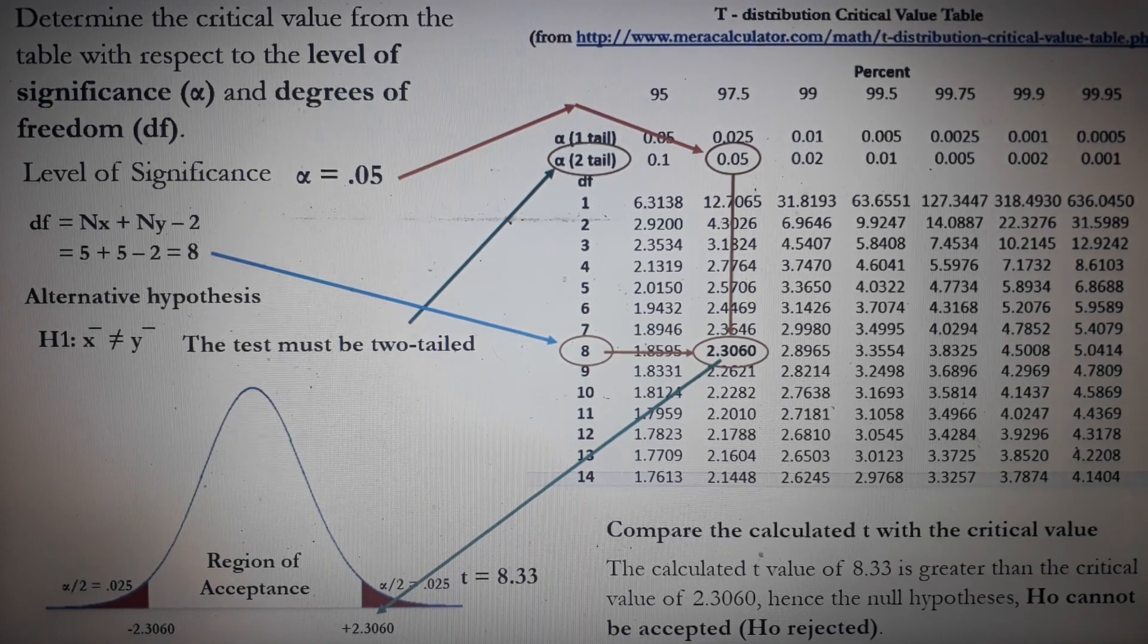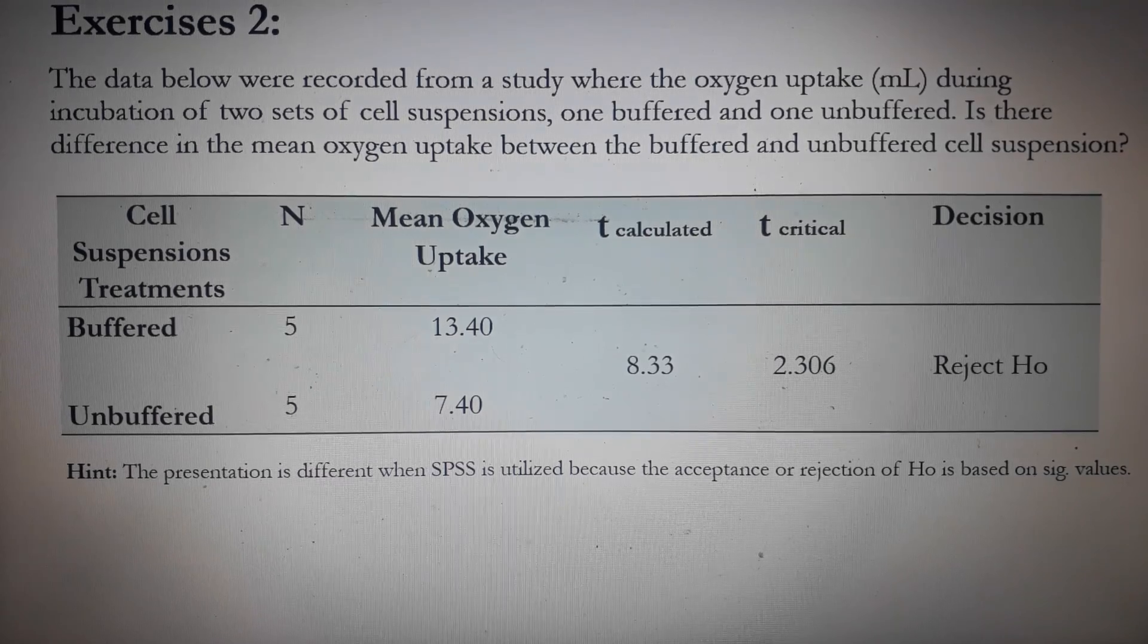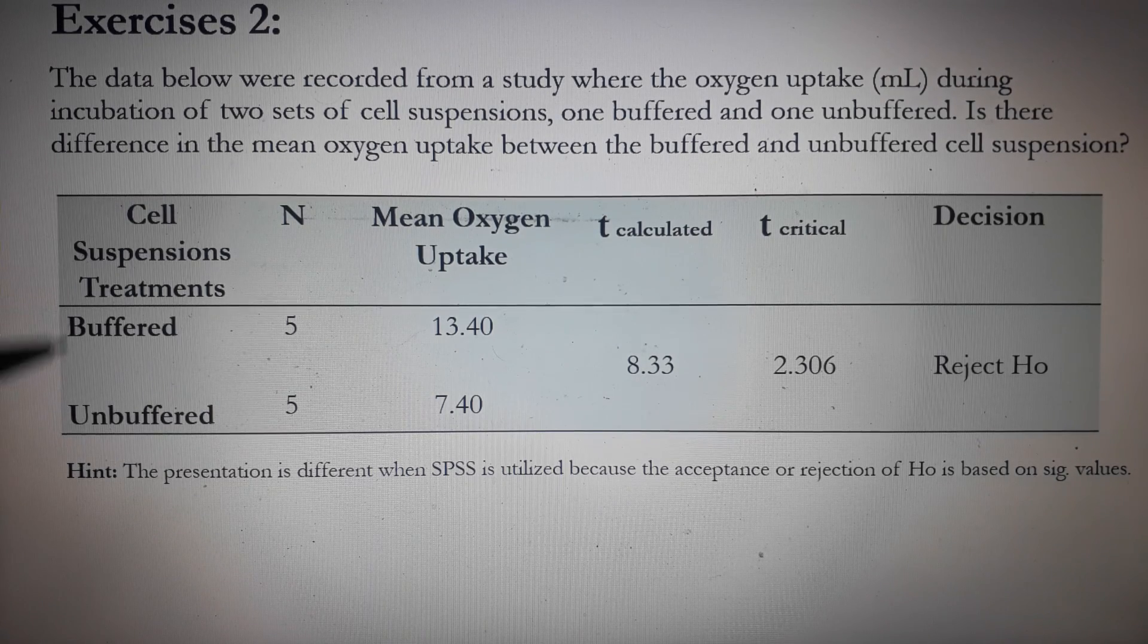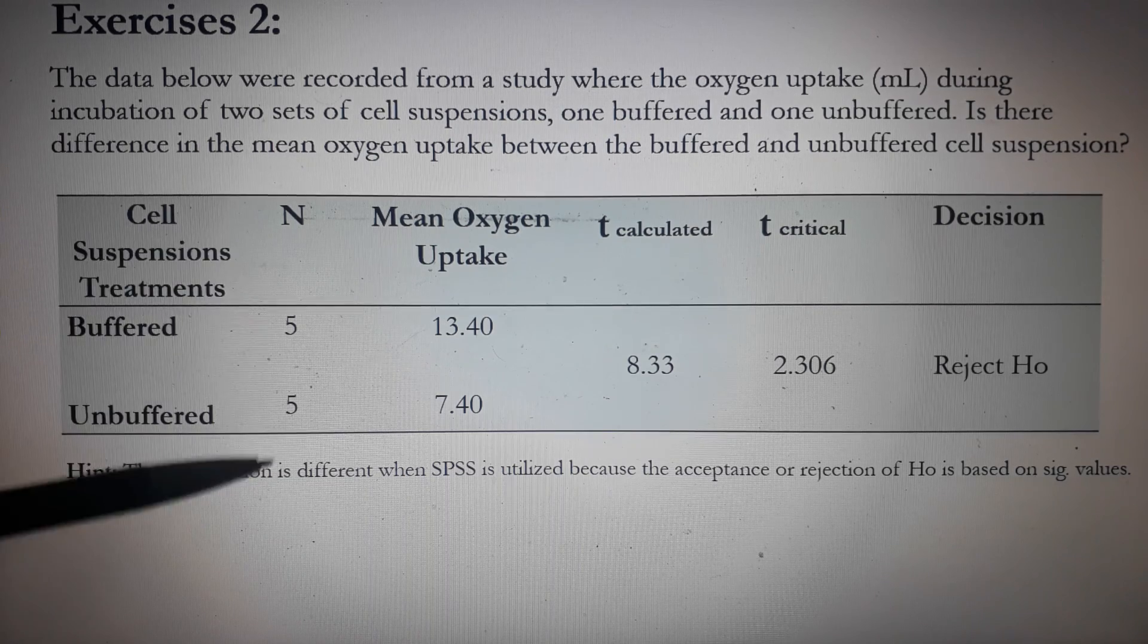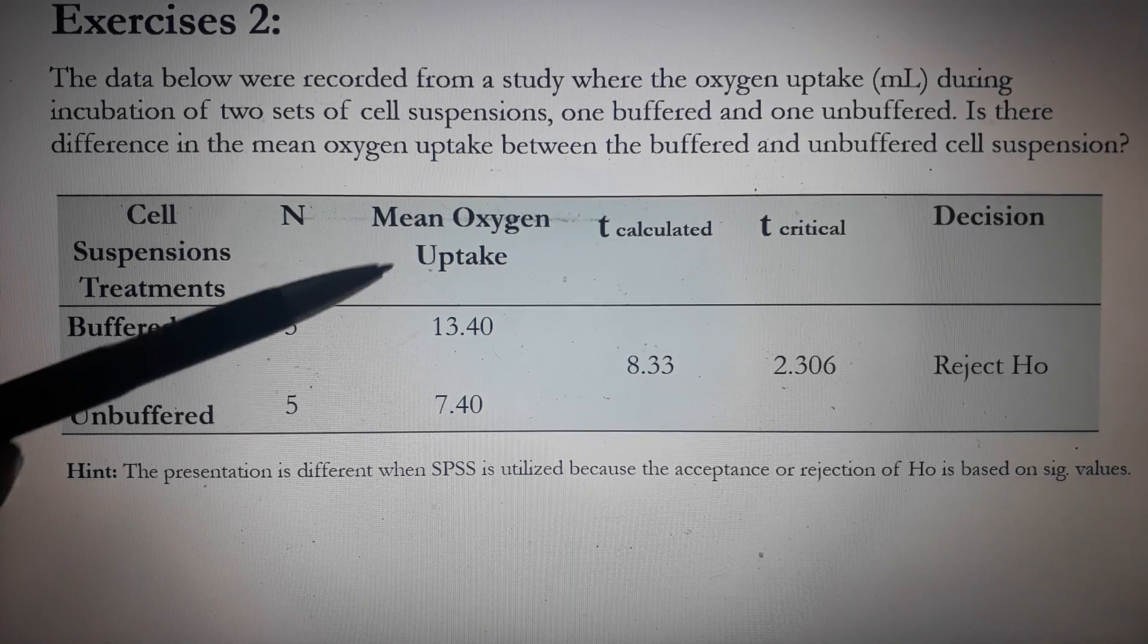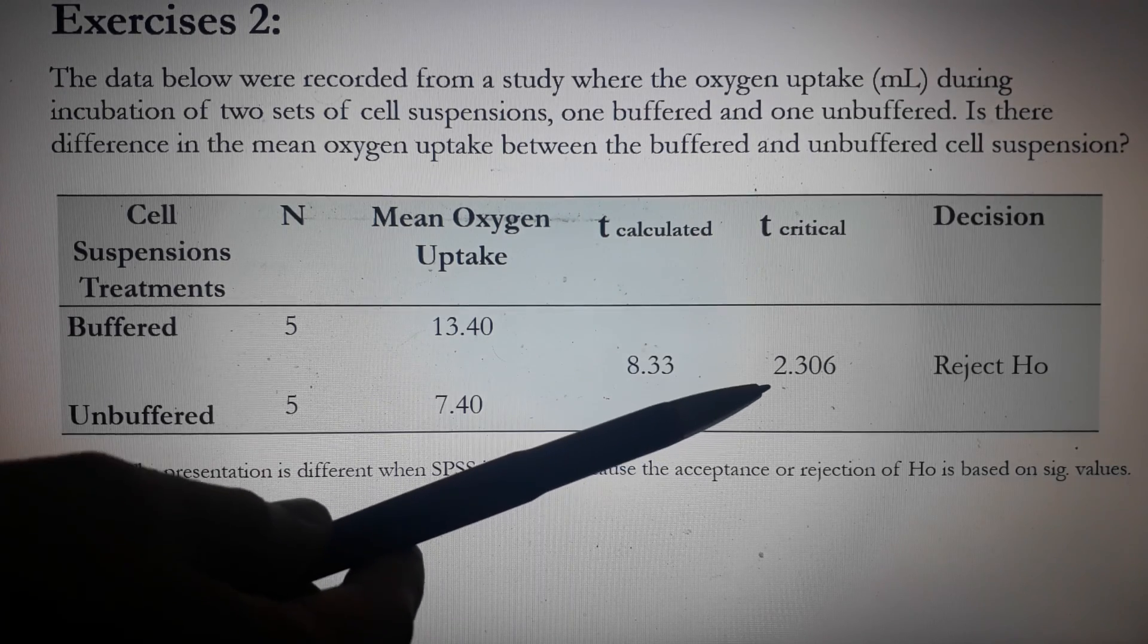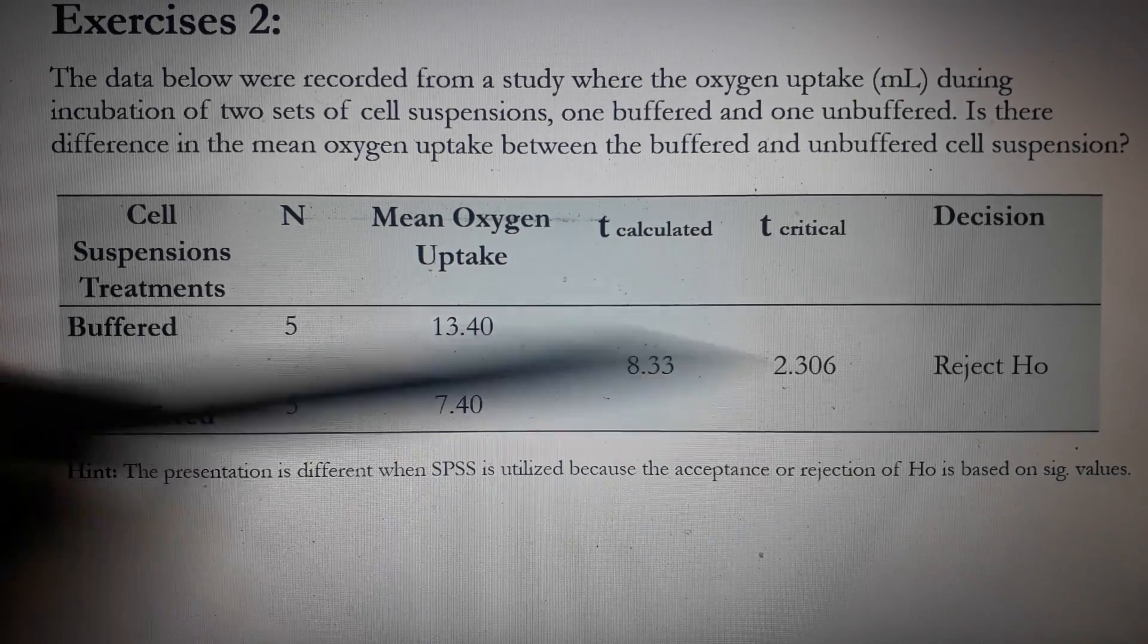So how can we present the results? We present this way. So we have here the table and then we can show the or we can have the name of the two groups, the number of cases, the mean oxygen or the average oxygen uptake, and then the T calculated, which is 8.33. The critical level, which is 2.306, and the decision is to reject the hypothesis.